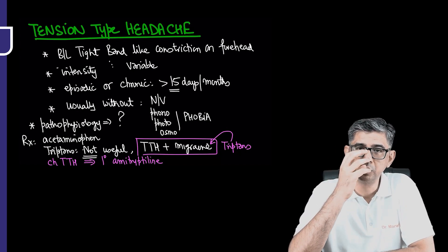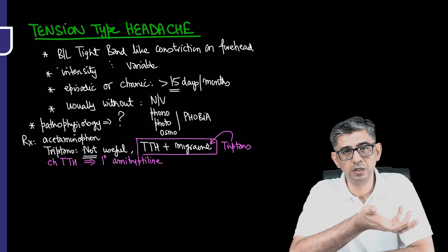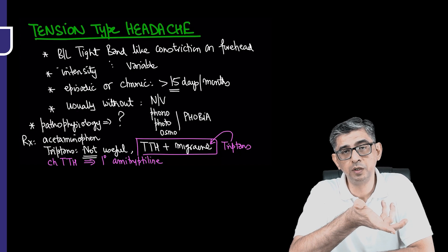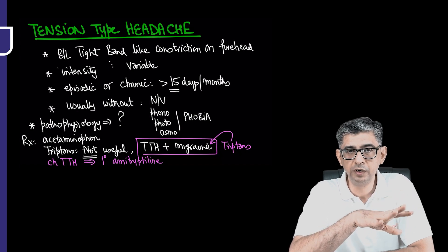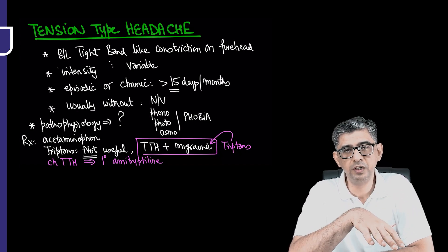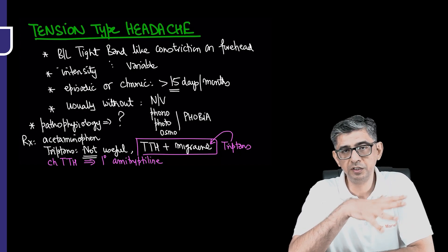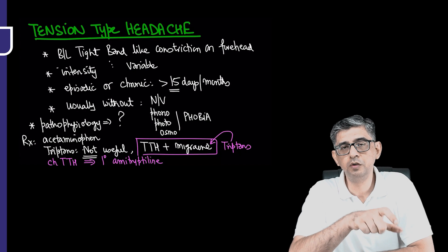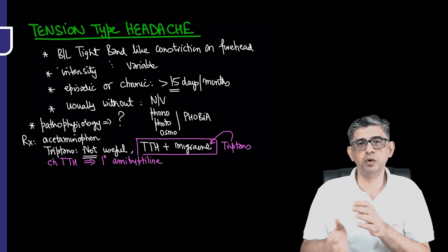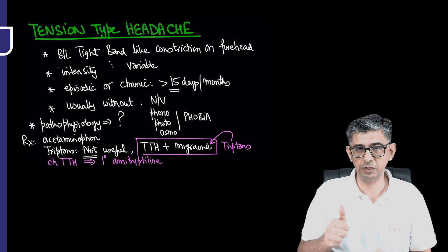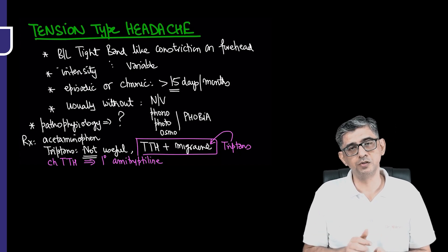Plus obviously there would be autonomic features like increased parasympathomimetic activity - watering from the eye, ear fullness, nasal stuffiness. There might be decreased sympathomimetic drive so ptosis can be experienced. So autonomic involvement will definitely be there and that would help you in easy differentiation. But even the peak intensity of headache achieved, the total duration of attack would help you in differentiating between migraine, tension type headaches versus trigeminal autonomic cephalalgias which are discussed in the subsequent video.